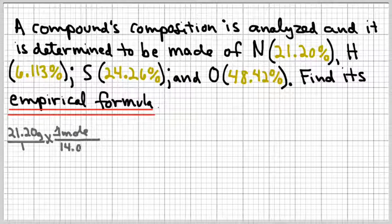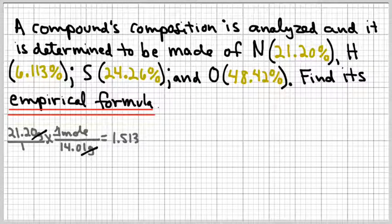So making that assumption, I've got 21.20 grams of nitrogen. And I want to get that to moles. And of course if you're using your wheel diagram, you know to go from grams to moles you divide by the molar mass. So I found I've got 1.513 moles of nitrogen.